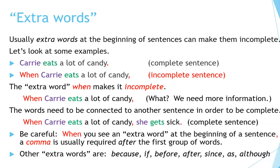Be careful: when you see an extra word at the beginning of a sentence, a comma is usually required after the first group of words. Other extra words include: because, if, before, after, since, as, and although. There are more words like this, but these are the most common ones.